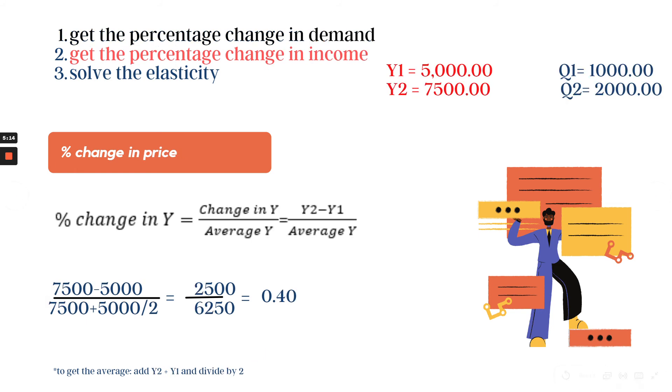Second step, we get the percentage change in income. Percentage change in income is the income 2 minus income 1 over the average income. So that's 7,500 minus 5,000 over 7,500 plus 5,000 divided by 2. So that's 2,500 over 6,250, and that equals 0.40.